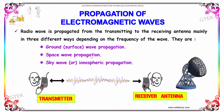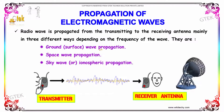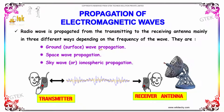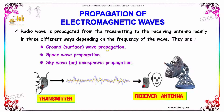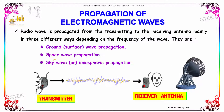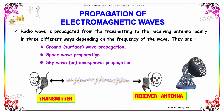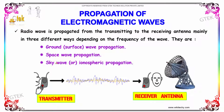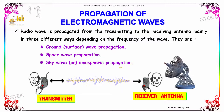The three types are: surface wave propagation or ground wave propagation, space wave propagation, and sky wave or ionospheric propagation.